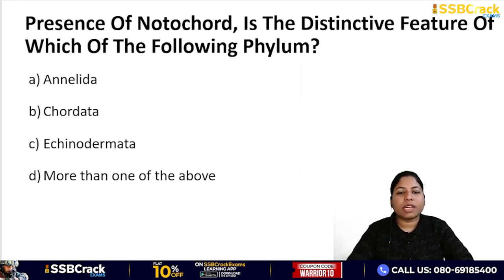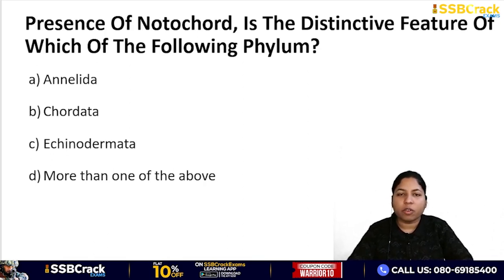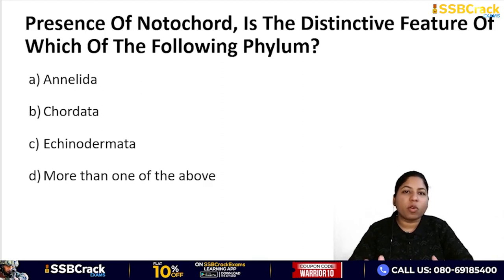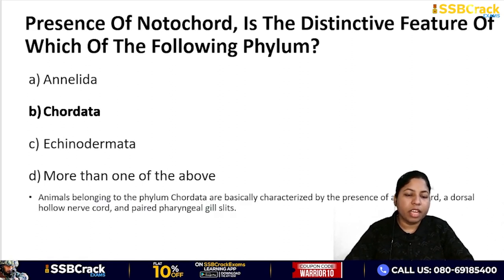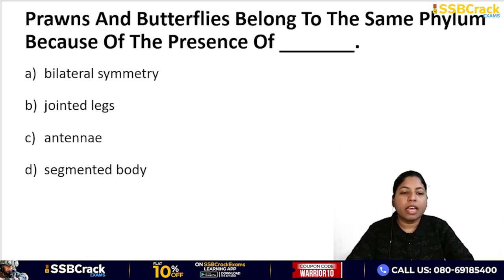Next question: presence of notochord is the distinctive feature of which phylum? This is why I was telling you that when you study this topic, your focus should be on the distinctive feature of each phylum — features that distinguish it from others. Options: Annelida, Chordata, Echinodermata, or more than one of the above. The correct answer is Chordata. In phylum Chordata, there is a notochord, nerve cord, and pharyngeal gill slits — these are the distinctive features.